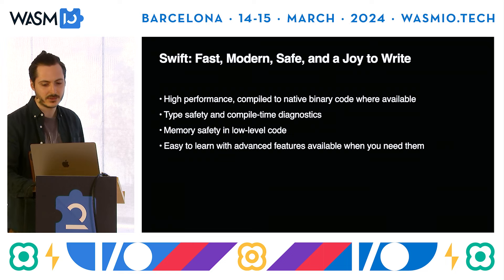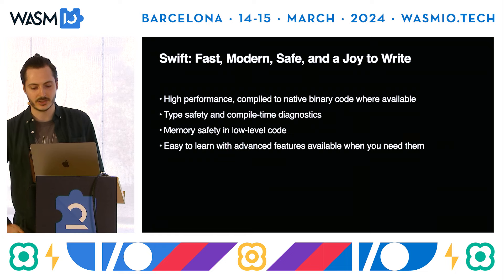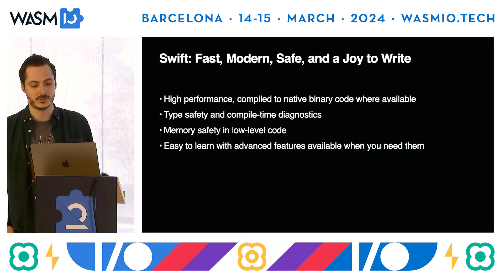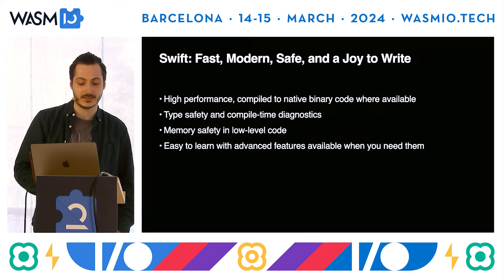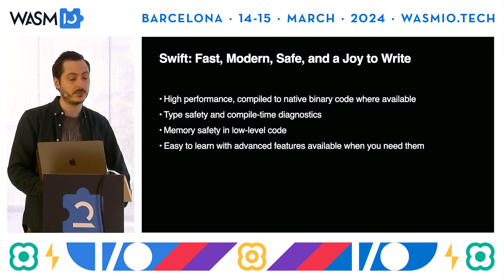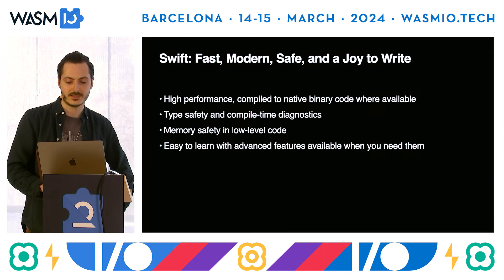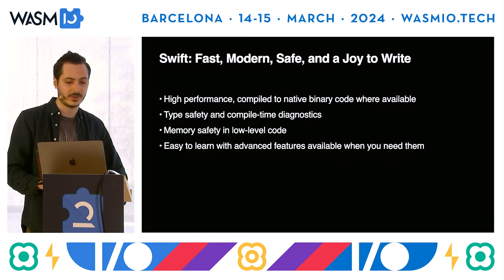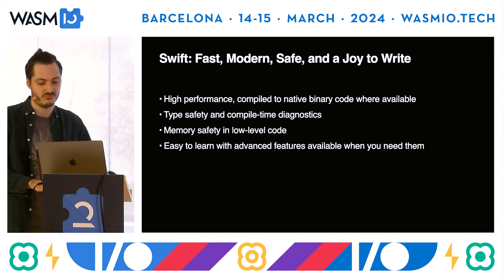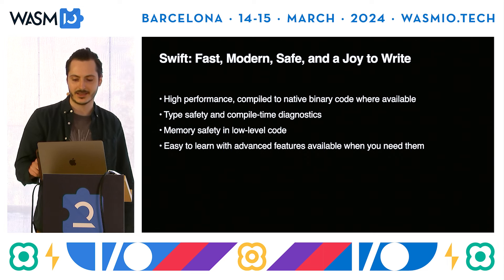Why would you consider Swift when targeting WebAssembly? It has high performance thanks to the full suite of LLVM optimizations, so your code will run fast. Swift uses automatic reference counting, so there is no garbage collector overhead giving you unexpected pauses during execution. Swift has a static type system so you can catch more errors at compile time and write portable code. It also has a gradual learning curve and is easy to pick up from a different language. Advanced features such as the memory ownership model are there when you need them but don't get in your way. To paraphrase a famous quote: with Swift, simple things are easy and complicated things are possible.